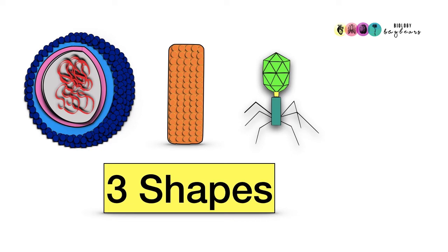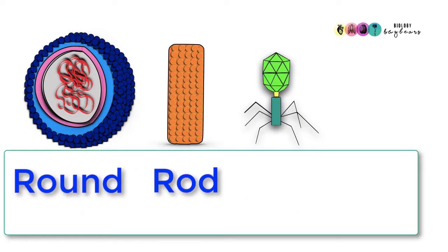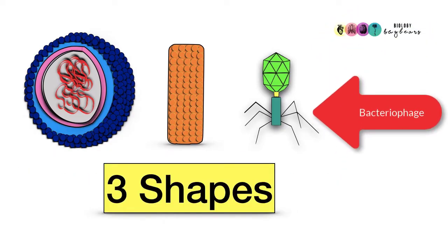Back to the exam material. You need to know the three shapes associated with viruses: the first is round, then there's rod, and finally complex—that's usually associated with a bacteriophage, which we'll discuss shortly.